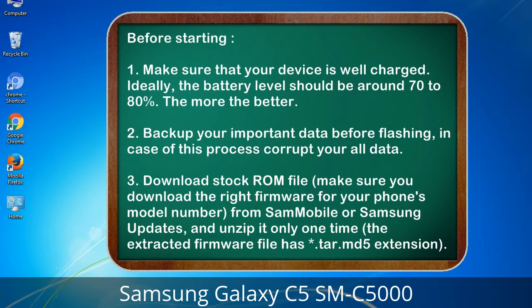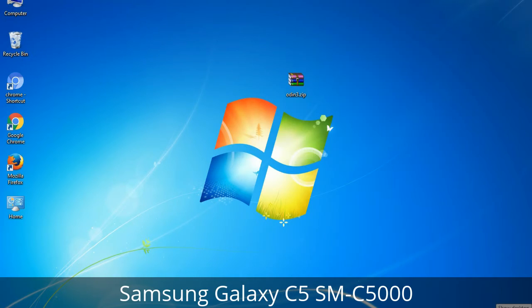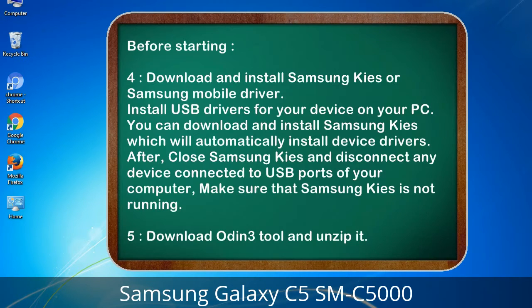3. Download the stock ROM file. Make sure you download the right firmware for your phone's model number, from Sammobile or Samsung updates, and unzip it only one time. The extracted firmware file has a *.tar.md5 extension.